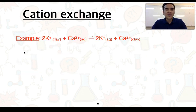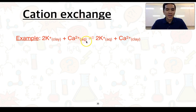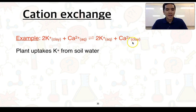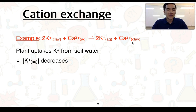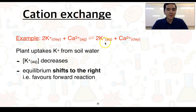We're now going to consider an example equation to look at how nutrients can be made available to plants. We have a dynamic equilibrium between potassium ions adsorbed to clay with calcium ions in solution, being in equilibrium with potassium ions in solution and calcium ions adsorbed to the clay. If plants take up potassium ions from soil water because it's what they need, this will decrease the concentration of potassium ions in the soil water.